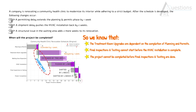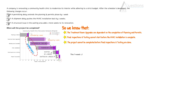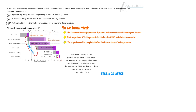So the new completion date should be 28 weeks. Let's review what we just discussed. The one-week delay in the permitting process only delays the treatment room upgrades. But the HVAC installation is not dependent on treatment room upgrades, so this would not have an impact on the completion date — we are still at 26 weeks. When we move to the next item, the two-week delay in the HVAC shipment delays the completion of the entire project by two weeks, because the inspection and testing and project completion are dependent on HVAC. So when you add two weeks to 26 weeks, now you are at 28 weeks.